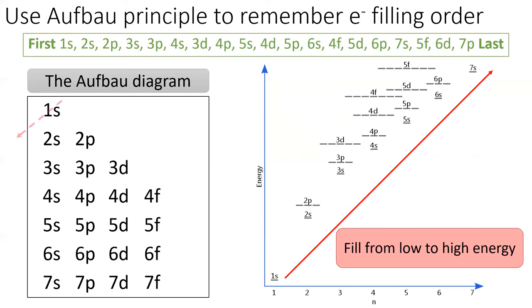Then, draw a diagonal line from the upper right to the lower left which crosses over the 1s subshell. The 1s subshell is the first to be filled. Next, draw a parallel diagonal line through the 2s subshell, which is the second to be filled. Then draw another parallel line through the 2p and 3s subshells. The 2p is filled before the 3s.